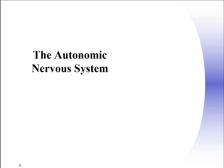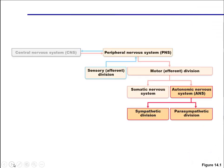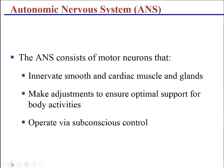The autonomic nervous system is the last subset we'll look at here underneath the peripheral nervous system. It consists of the sympathetic side and the parasympathetic side. The autonomic nervous system only innervates the smooth muscles, the cardiac muscles, and the glands. It has no effect on skeletal muscle, and it makes sure that we maintain homeostasis through a subconscious control mechanism.